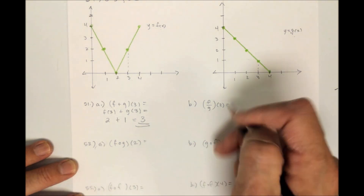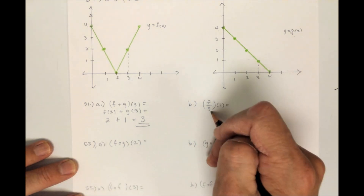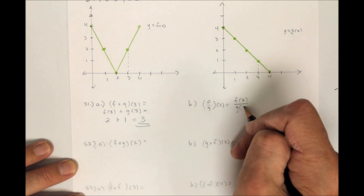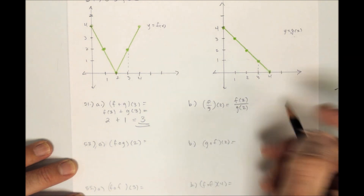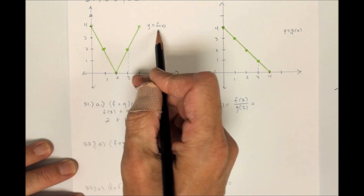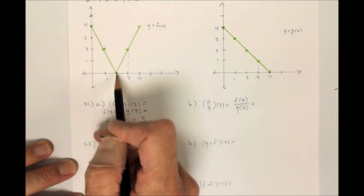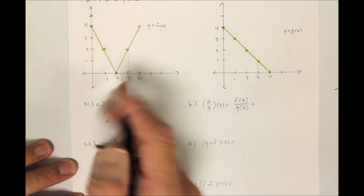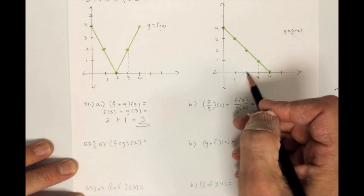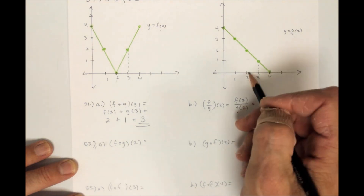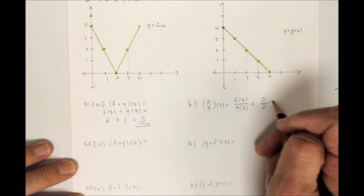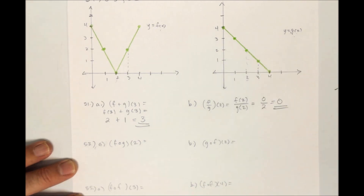For f divided by g of 2, this is f of 2 divided by g of 2. F of 2 from the graph is 0 — it's right on the x-axis. G of 2 from the graph equals 2. So I have 0 over 2, which is 0. You just use the graphs and find the y values — start at the x, go up to the graph, and find the y value that corresponds.